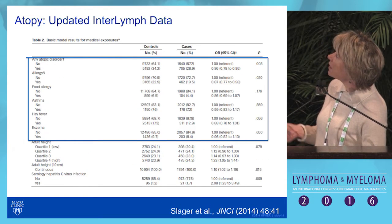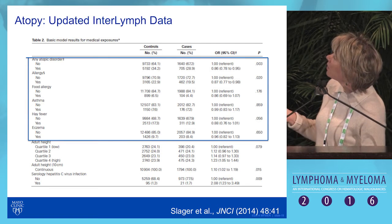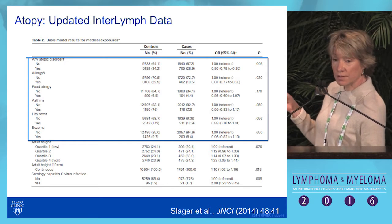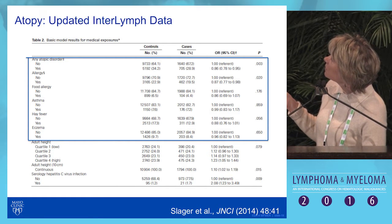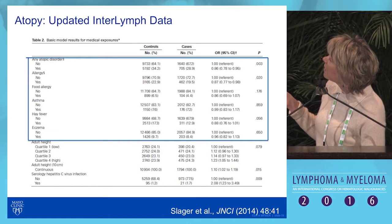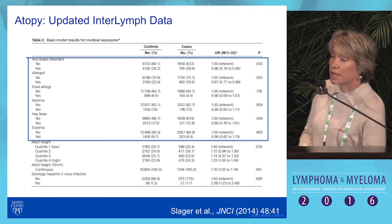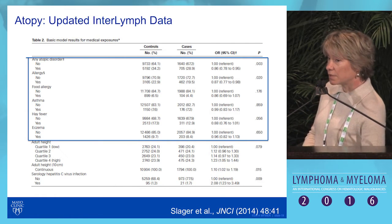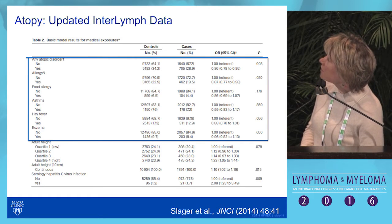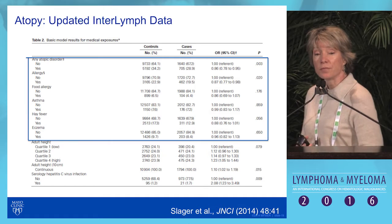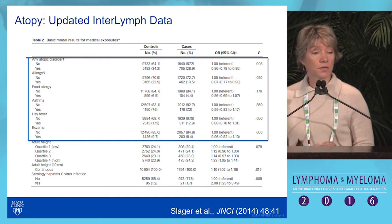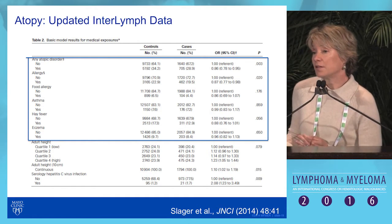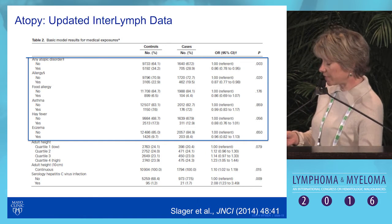We updated these data in the 2014 paper looking at allergies and risk of CLL. We still see a significant reduction in risk for any allergies and hay fever, though eczema and asthma attenuated to a null result. The underlying biology is that atopy represents a hyperimmune system, and we hypothesize that a hyperimmune system provides better protection against cancer.